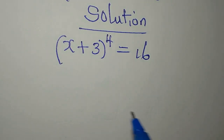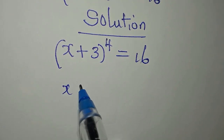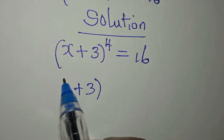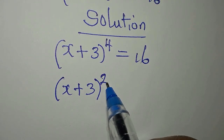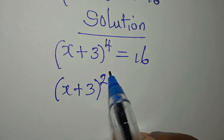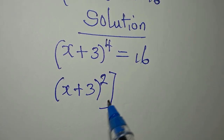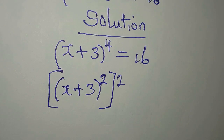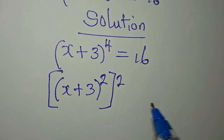So from here we know that x plus 3 to the power of 4 can be written as x plus 3 to the power of 2, to the power of 2, because if you remove these brackets you multiply the powers.